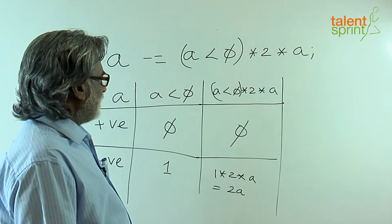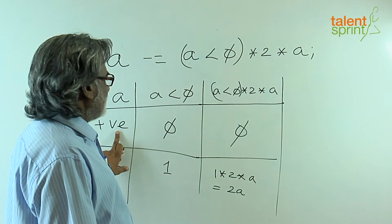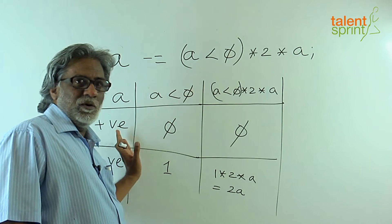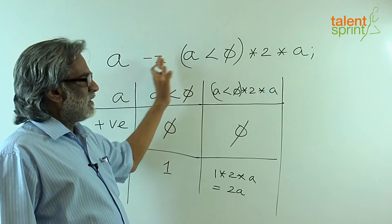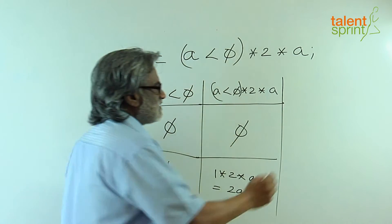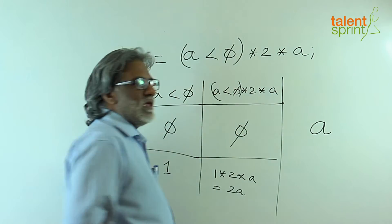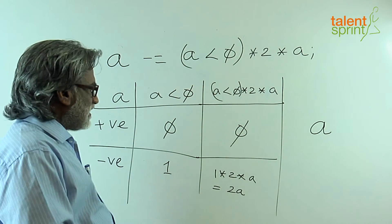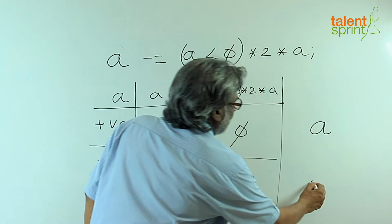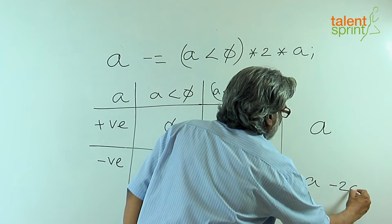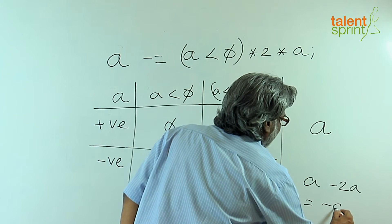So now we can understand the whole expression as, if a is positive, it is a minus equal to 0. In other words, the expression evaluates to a. If a is negative on the other hand, it evaluates to a minus 2a or minus a.